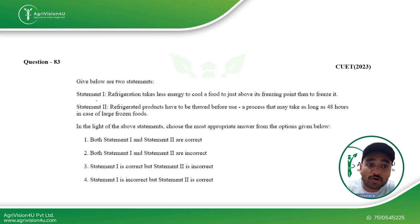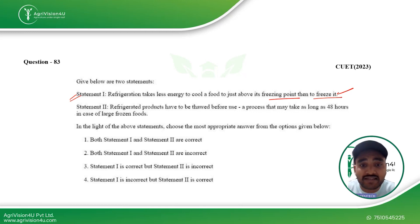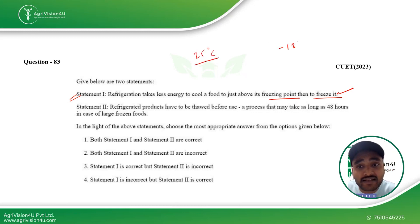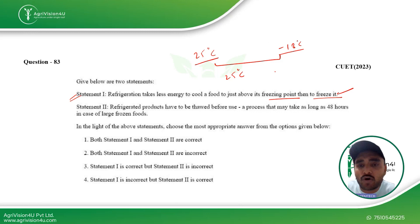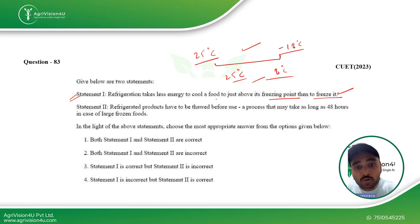Coming to the next statement-based question: Statement one — refrigeration takes less energy to cool a food just above its freezing point than to freeze it — is correct. If a food is at 25°C and you want to bring it to minus 80°C, the gap is large. If you only need to bring it to 8°C, the gap is small, so refrigeration takes less energy in that case.